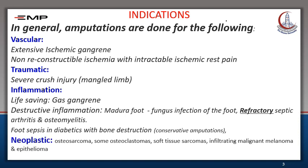The neoplastic indications include osteosarcoma, some osteoclastomas, soft tissue sarcomas, infiltrating malignant melanoma, and epitheliomas. And lastly, from the orthopedic point of view, some uncorrectable deformities are managed by amputation.